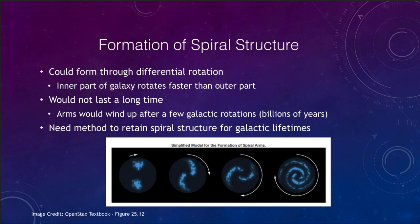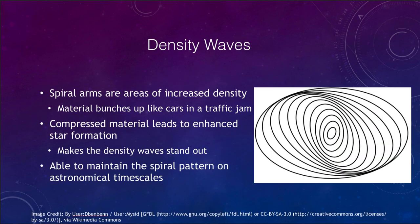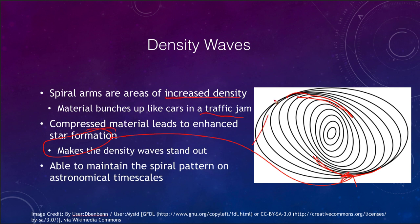The way we believe this works is through what are called density waves — spiral density waves. These are areas of increased density, much like the way material bunches up, the way cars bunch up in a traffic jam. As the density wave travels through, the compressed material is where star formation is going to occur — stars begin to form where material is compressed, since pushing more material together makes it more likely to form stars. While the density waves themselves would be invisible, this highlighted star formation makes the density wave stand out and gives us the pattern.